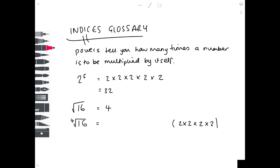We can make it slightly more complicated by writing a small 4 next to the root sign — this means finding the fourth root. We're looking for the number which you multiply by itself four times to get 16. As written here: 2×2=4, ×2=8, ×2=16, which is why the fourth root of 16 is 2.